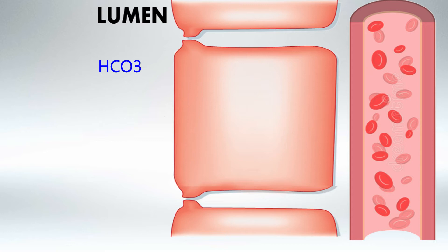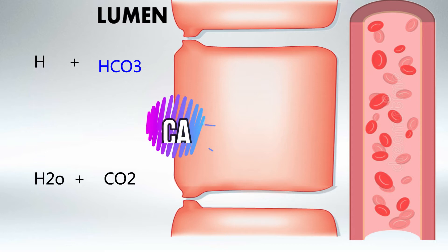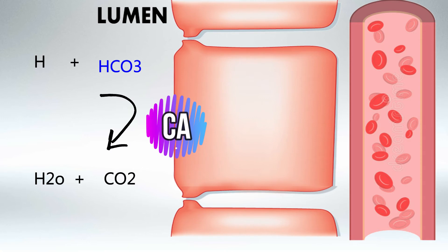Unfortunately our bodies don't have a mechanism to reabsorb bicarbonate directly. So what we'll do is combine bicarbonate with hydrogen using the enzyme carbonic anhydrase to create carbon dioxide and water. Luckily we can absorb carbon dioxide.